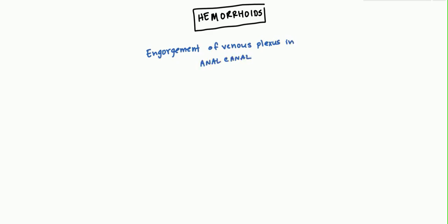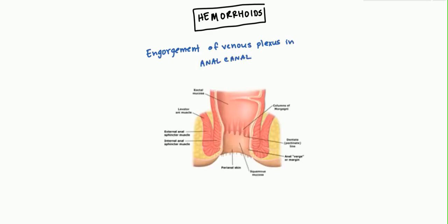The best way to start is with the anatomy of the anal canal. We have a diagram here of the anal canal, and the most important part is this line that I've drawn here — that's called the dentate, or also known as the pectinate line. This is really important because early on in embryology, this is a combination of two different embryological parts.